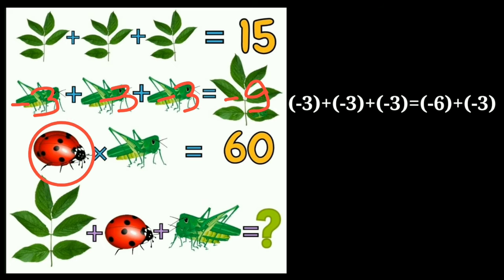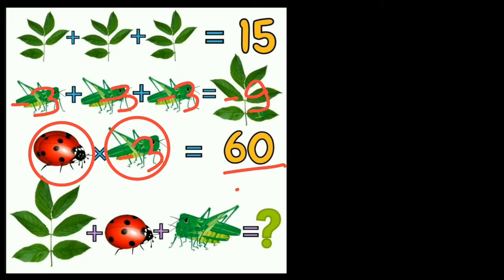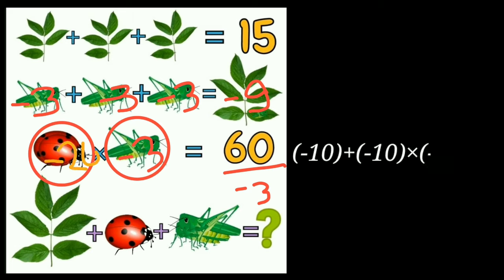Now the third equation. Here is a ladybird, and there is 1 grasshopper. 2 ladybirds plus 1 grasshopper equals 60. We know the value of the grasshopper is minus 3, so 2 ladybirds equals 60 divided by minus 3, which gives minus 20. That means the value of 1 ladybird is equal to minus 10.